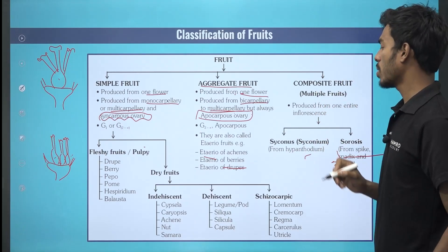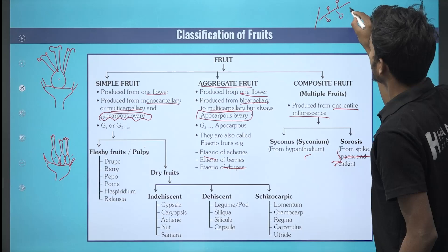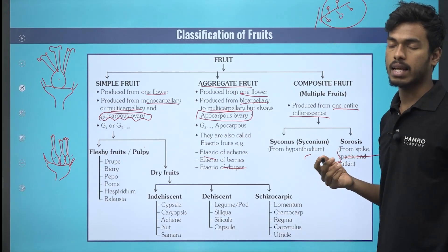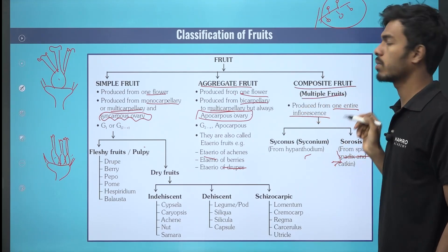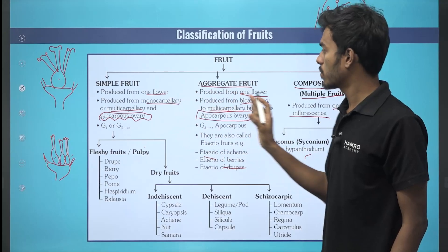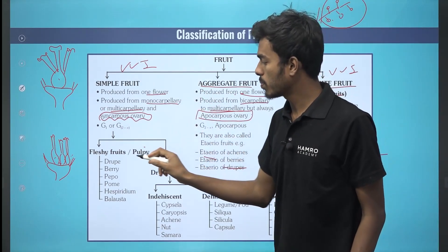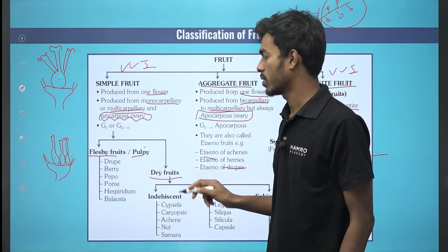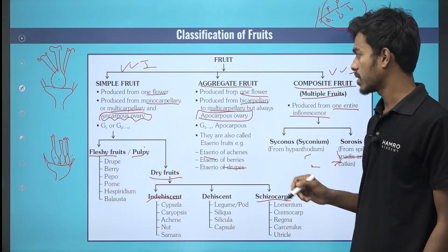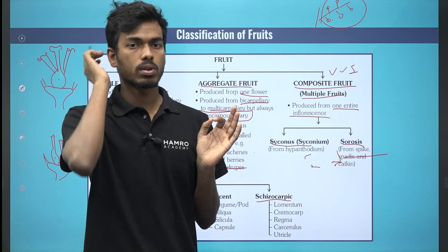We have a composite fruit, which means one entire inflorescence undergoes fertilization, and the fruit will grow from the inflorescence. So we classify by simple fruit, aggregate fruit, and composite fruit.